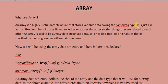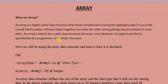Going back to an array, when an array is storing data, those data have to be of the same data type. We are looking at how we deal with Pascal. Now, an array is just like a small fixed number of boxes linked together one after the other for storing things that are related to each other. An array is said to be a static data structure, because once declared, its original size specified by the programmer will remain the same.